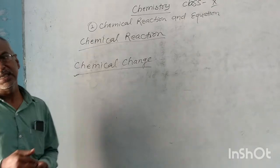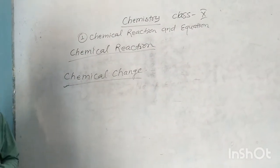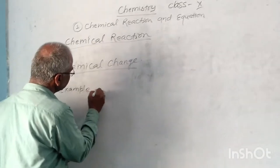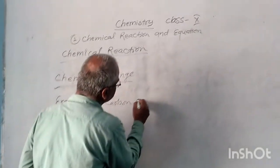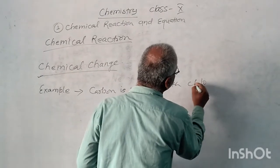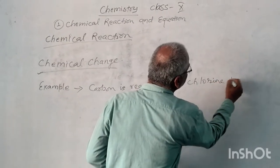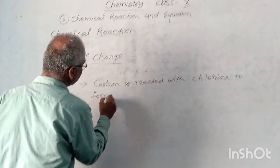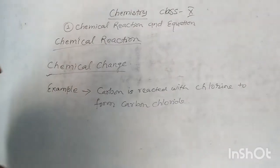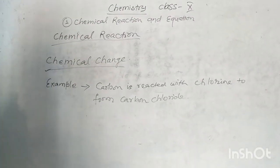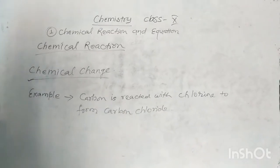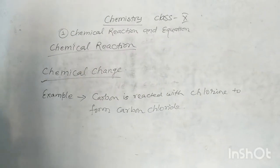What is Chemical Reaction? In Chemical Reaction, we see a new substance formed. For example, Carbon reacts with Chlorine in the presence of Sunlight to form Carbon Chloride. It has different types of reactions. We study Chemical Reaction.